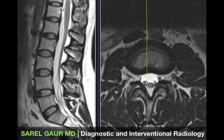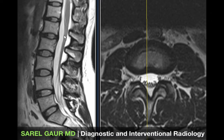Posterior to that I have the spinal canal region, which contains the spinal cord. The tip of the spinal cord is called the conus medullaris and it usually splits anywhere between the T12 and L1-L2 levels. Here you can see it splitting at about the L1-L2 level.